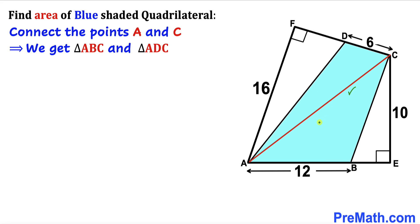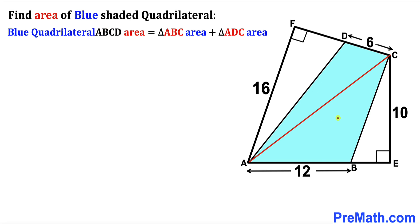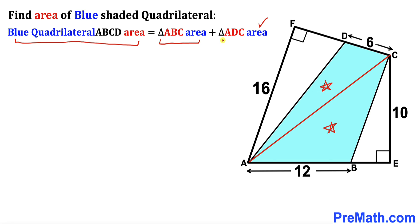As you can see in the next diagram, line AC divides the blue shaded area into two triangles: triangle ABC and triangle ADC. The area of the blue quadrilateral ABCD equals the combined area of triangle ABC and triangle ADC. Our task is to calculate each of these two triangular areas.